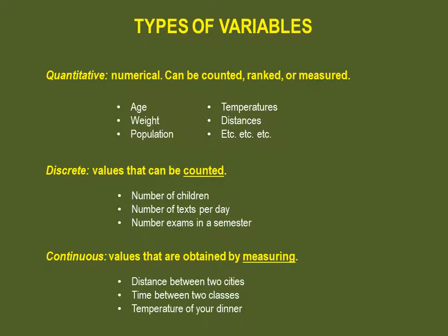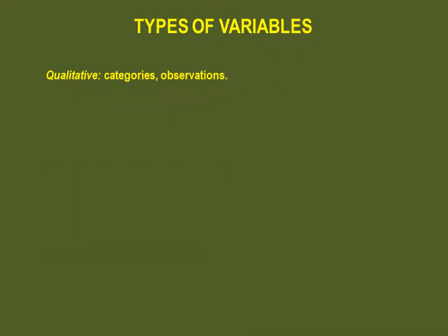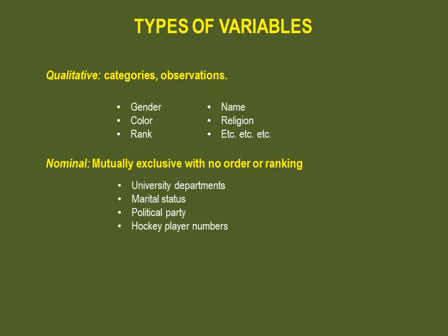The second category of quantitative variables is continuous variables — values that are obtained by measuring, such as distance between two cities, time between your two classes, and temperature of your dinner. The second type of variable is the qualitative variable. As the name suggests, it refers to anything that relates to quality, but be careful, because qualitative variables can be disguised as numbers. We can divide qualitative variables into two categories. The first category is nominal, which classifies data into mutually exclusive categories with no ranking or order possible.